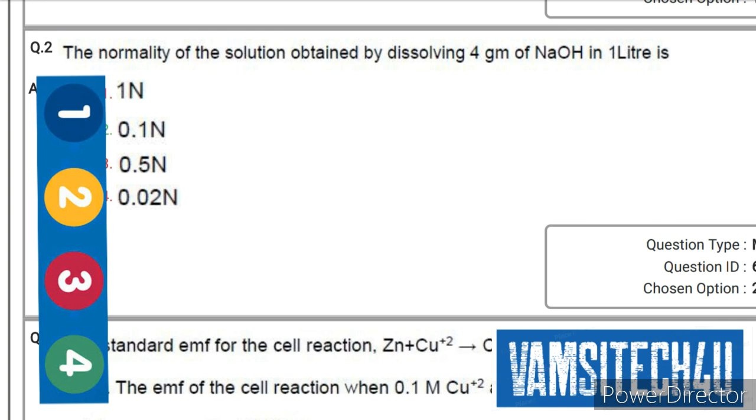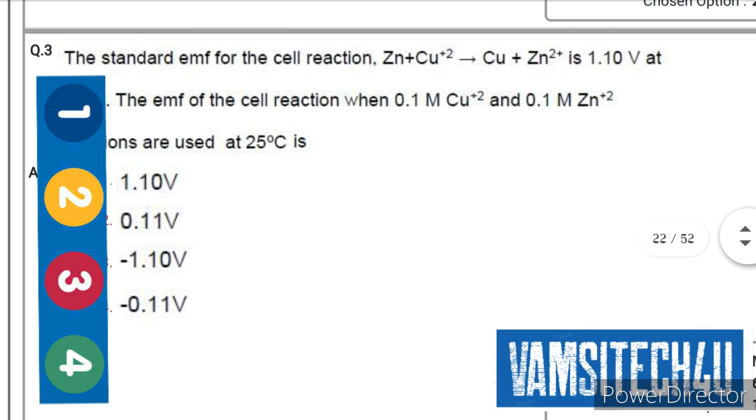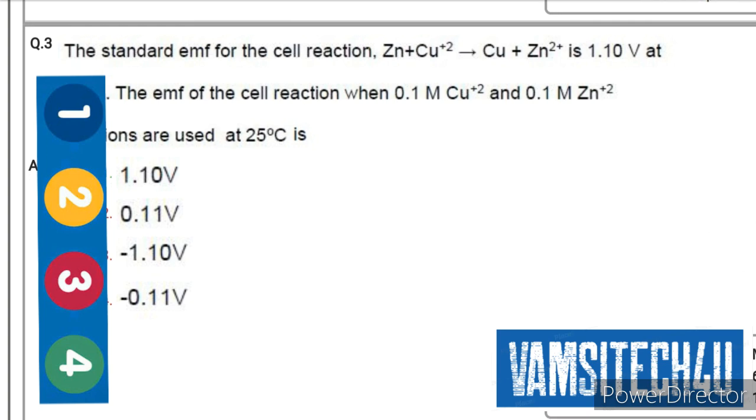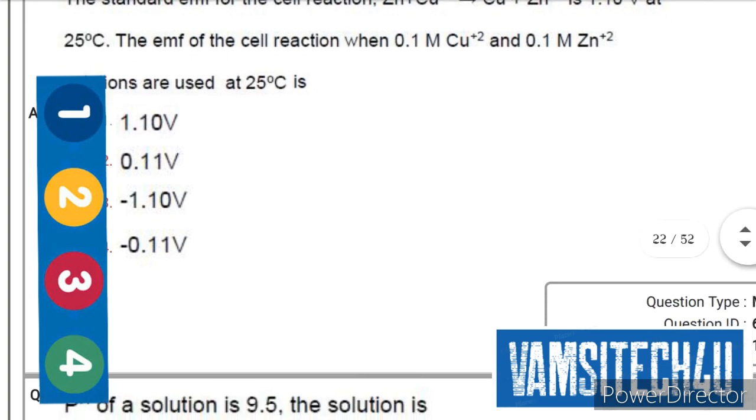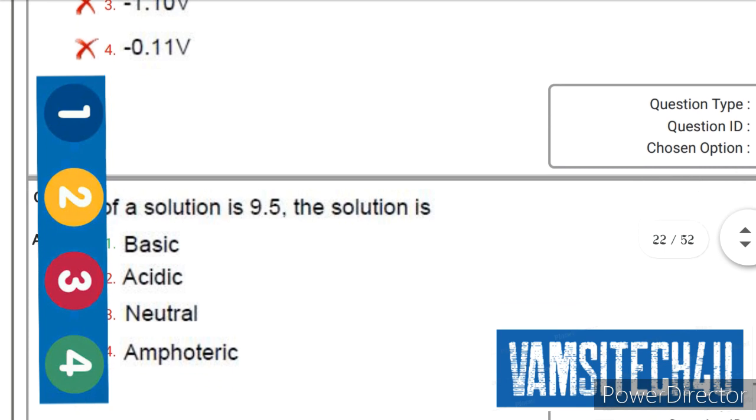Next question: The standard EMF for the cell reaction Zn + Cu²⁺ → Cu + Zn²⁺ is 1.10 volts at 25 degrees Celsius. The EMF of the cell reaction when 0.1M Cu²⁺ and 0.1M Zn²⁺ solutions are used at 25 degrees Celsius... the correct answer is first one, that is 1.10 volts.